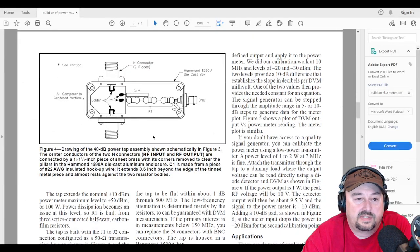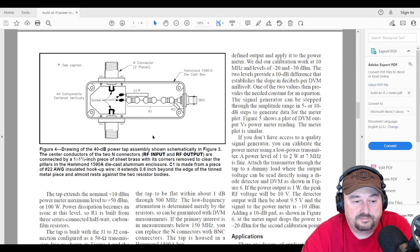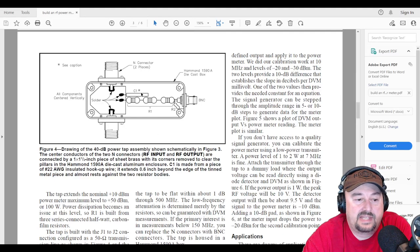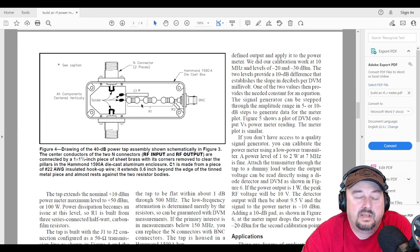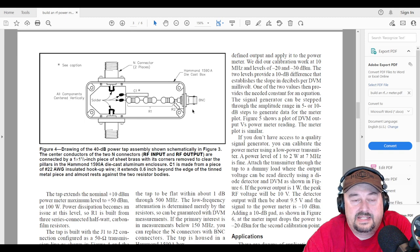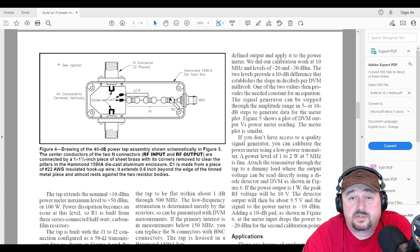So let's take a quick look at, this is the drawing, and this is what this thing's really going to look like when we're done with it. And it talks a little bit about seeing this diagram for C1, which is this capacitor. Here they say that it's a 22 AWG insulated hookup wire that extends 0.6 inches beyond the edge of the tinned metal piece, and almost resides against the two resistor bodies. What I had seen is that somebody had taken the leg of the resistor and bent it around and used that. So we're going to try that first, and if it doesn't work, then we'll go ahead and look at something like this 22-gauge hookup wire.